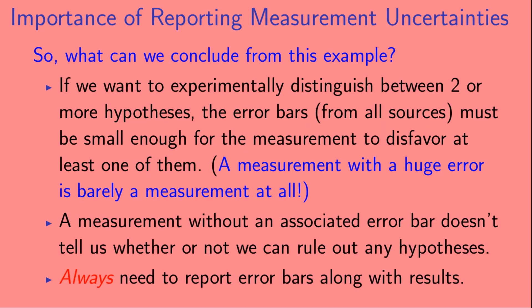So what can we conclude from this example? If we want to experimentally distinguish between two or more hypotheses, the error bars from all sources must be small enough for the measurement to disfavor at least one of them. And a measurement with a huge error bar is barely a measurement at all.